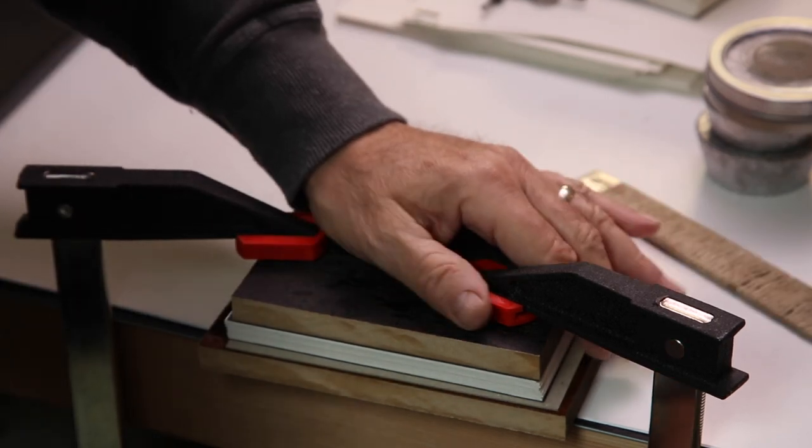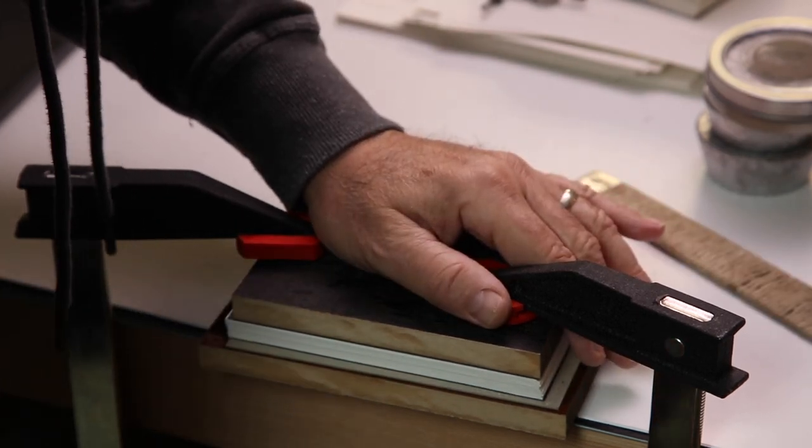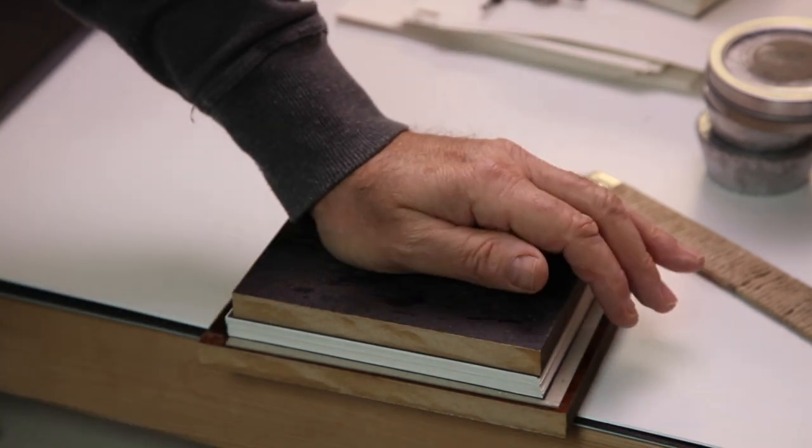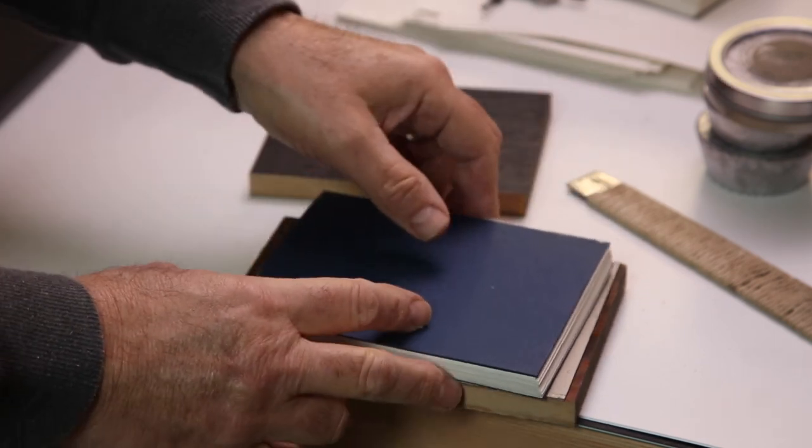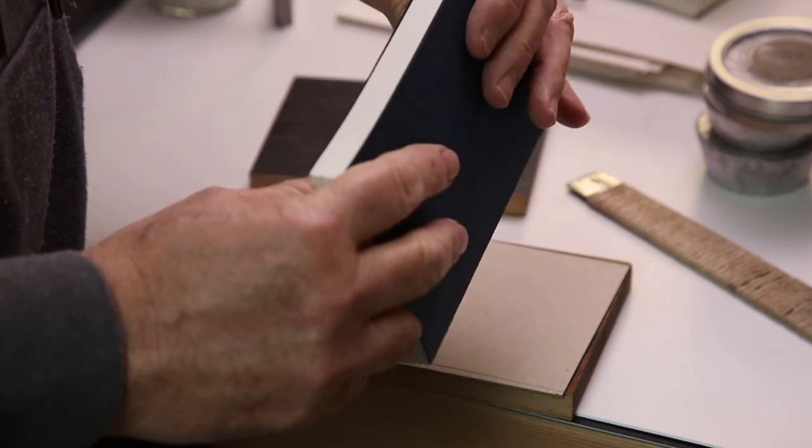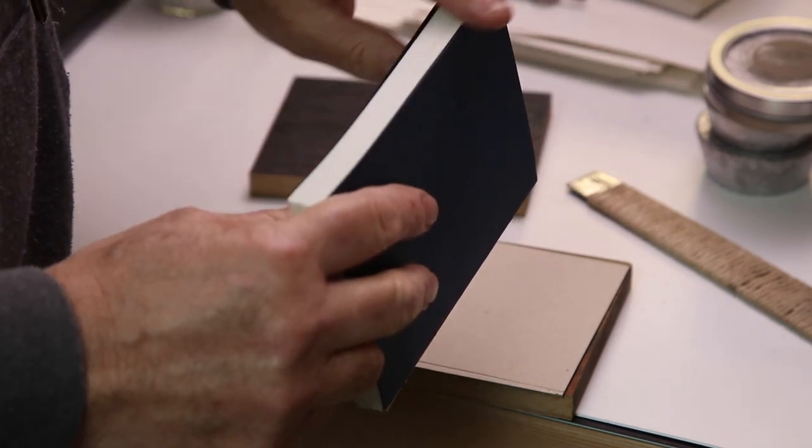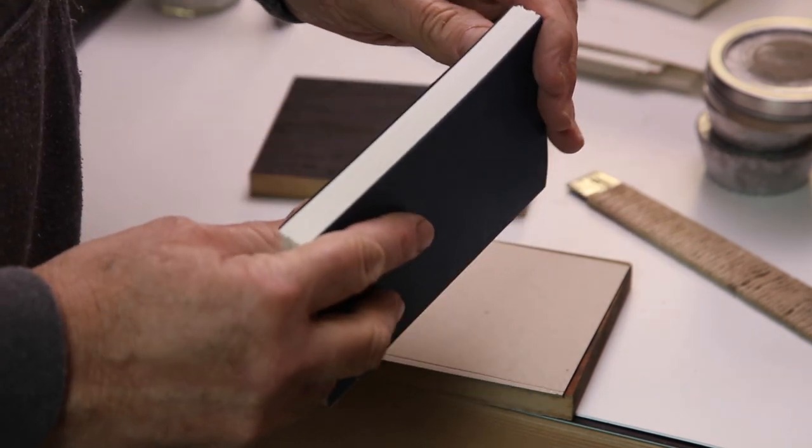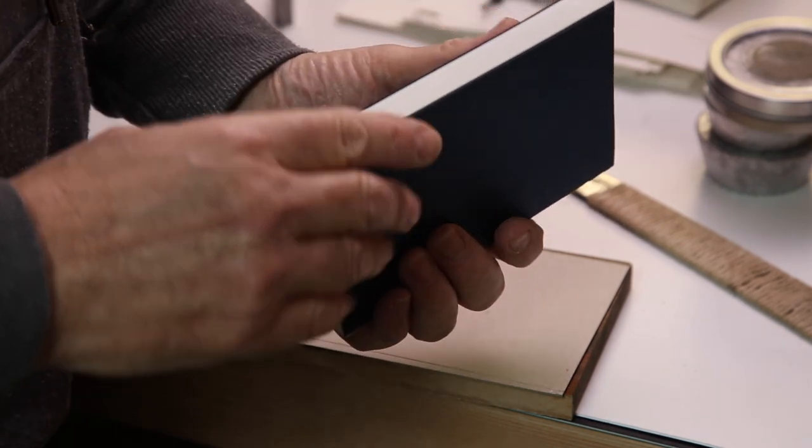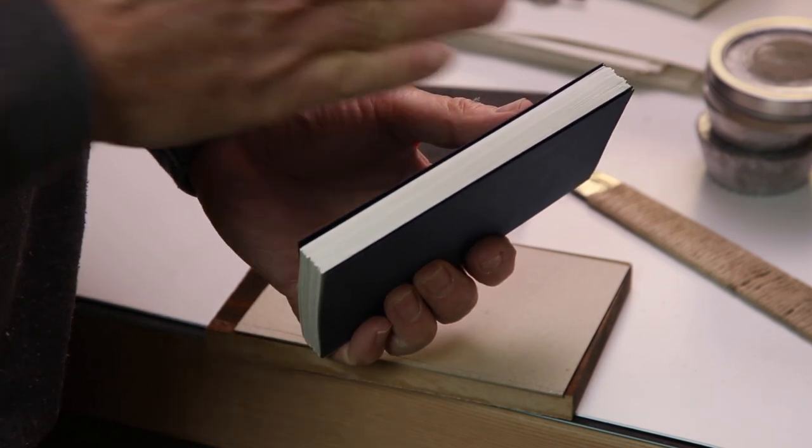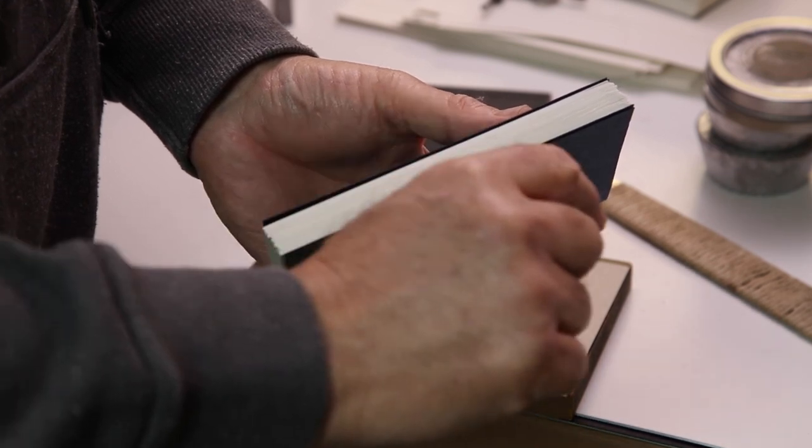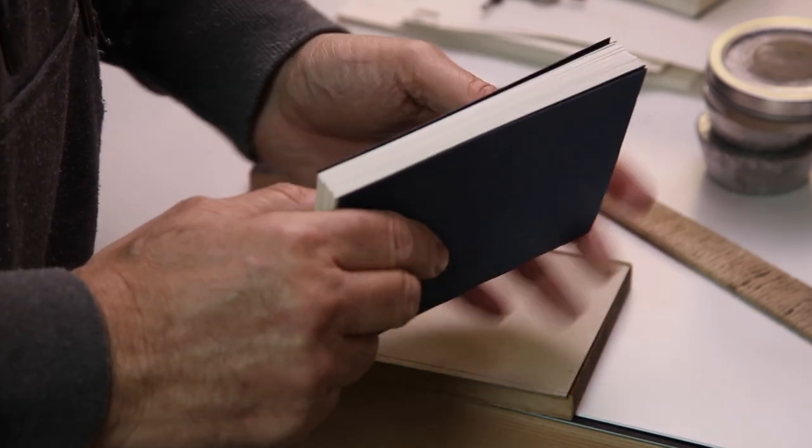So we've finished trimming the fore edge, and I'll say that looks very good. Sometimes when you use a guillotine, if the guillotine's blade has a bit of a nick, since the blade goes at a diagonal you sometimes see little ridges. I don't see that here.